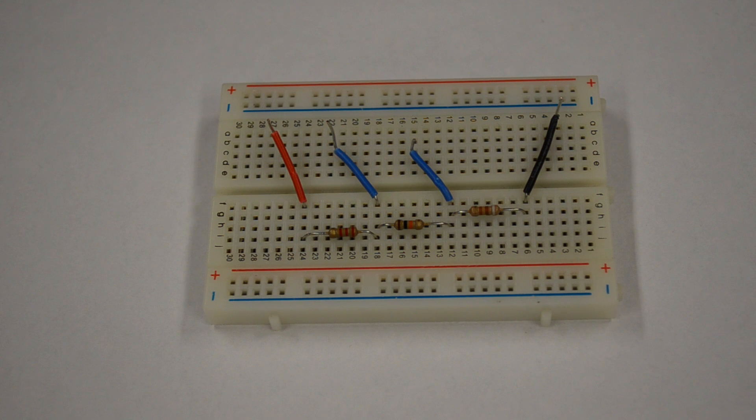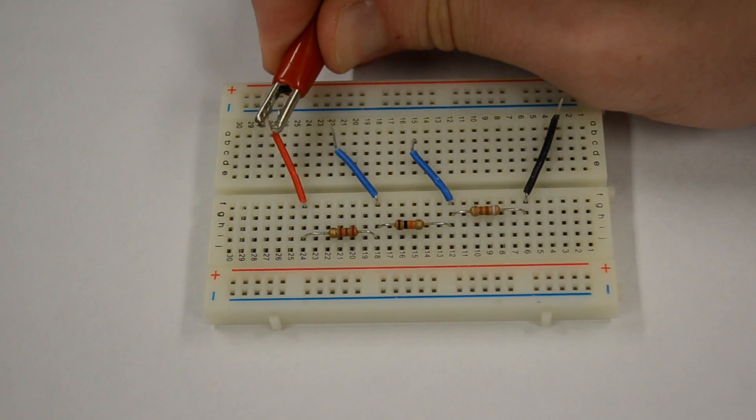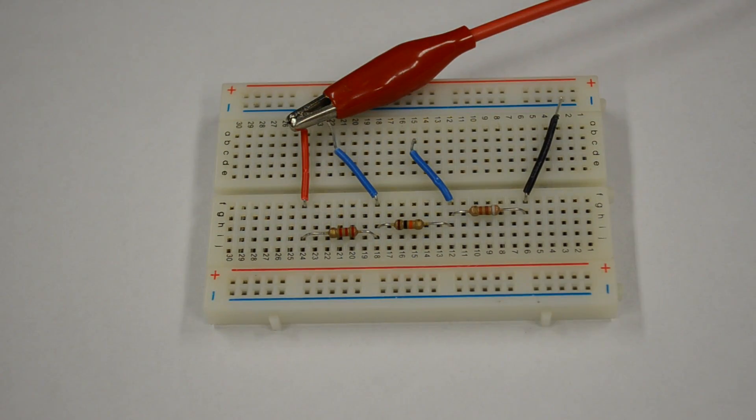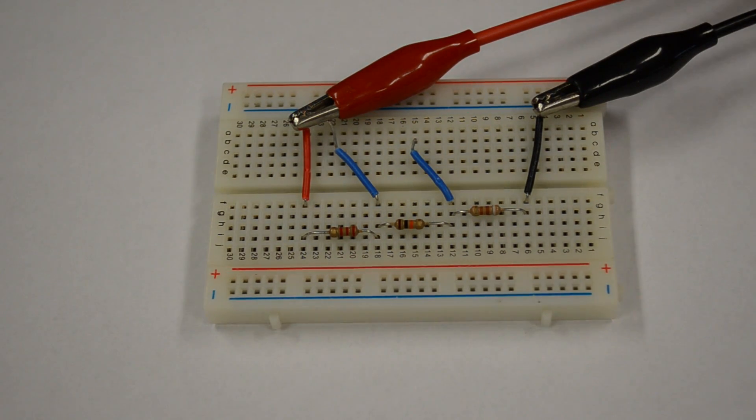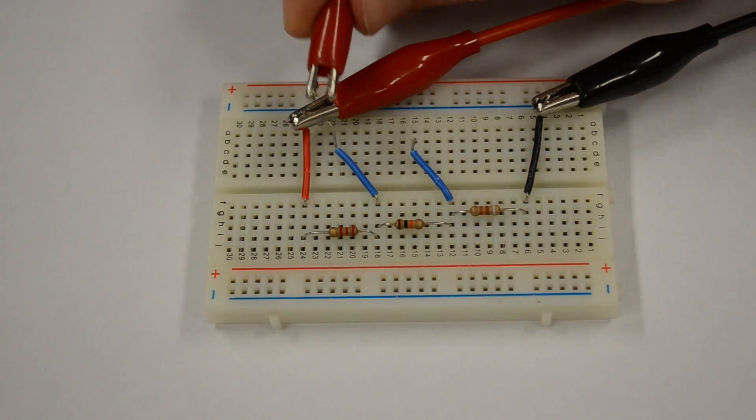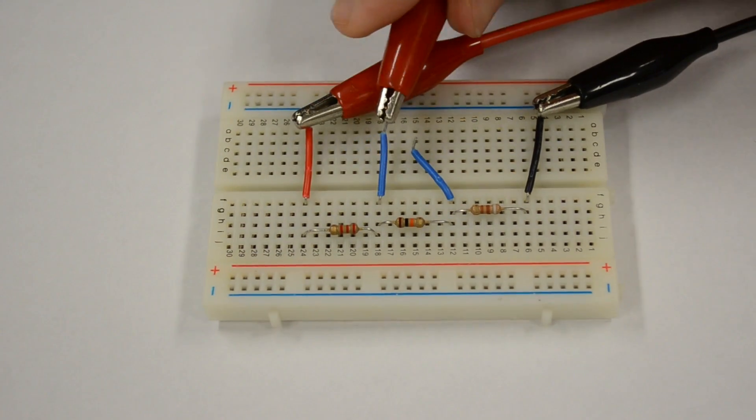Now let's try to measure another quantity such as voltage. I'll start by attaching the leads of the power supply to the circuit we built earlier. We currently have the power supply set to provide 3 volts. Now let's attach the leads of the multimeter to the blue jumper wires, which are connected to each end of the middle resistor.